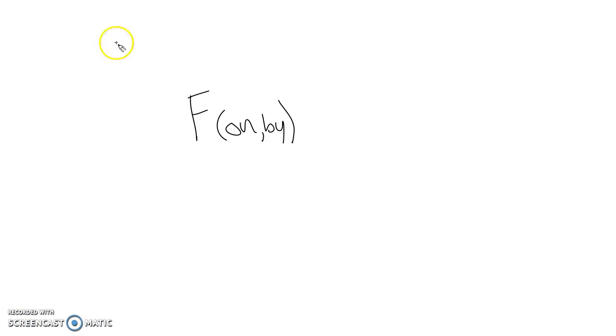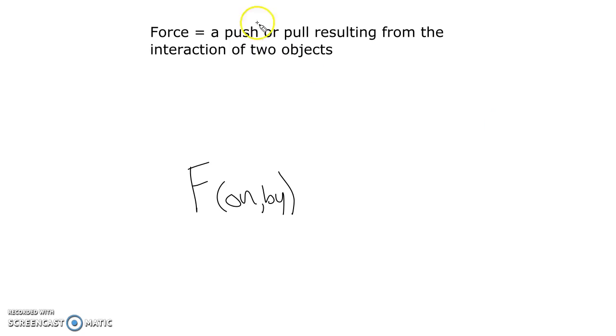Next I'd like to introduce something that I call on-by notation. On-by notation emphasizes this idea that a force is a push or pull resulting due to the interaction of two objects. The on and by - this is the object that the force is acting on, and then this is what the force is due to, or what it's by.